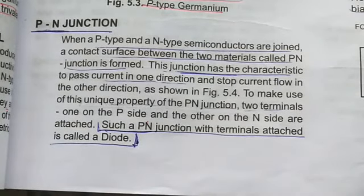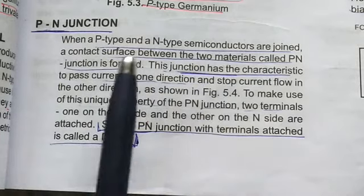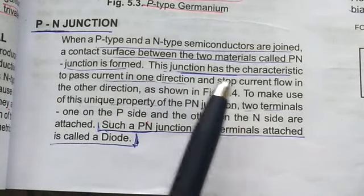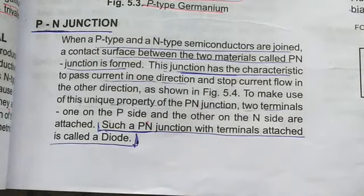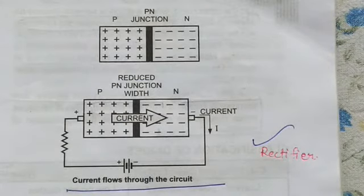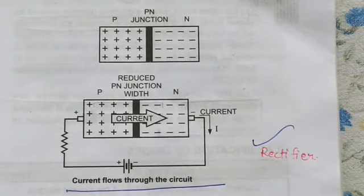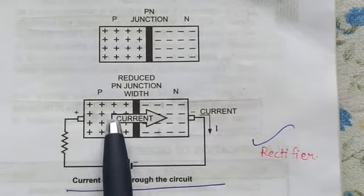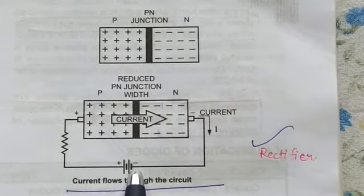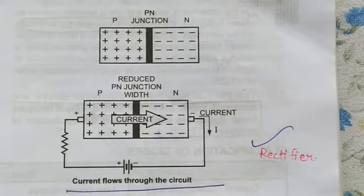When the P-type and N-type semiconductors are joined together, this junction is called the P-N junction, also called a diode — the P-N junction diode — and it is known as a rectifier. You can see this is a P-N junction diode and the current is flowing from the positive to the negative terminal; this is how current flows through the circuit.